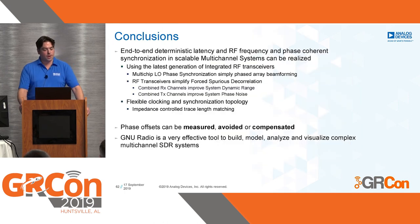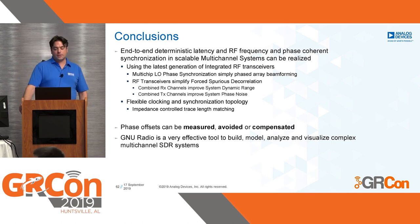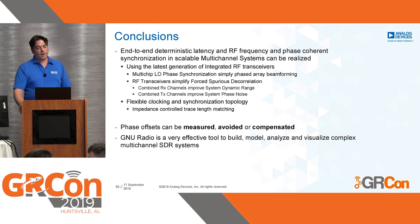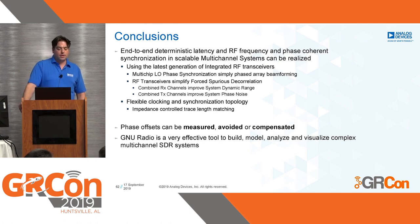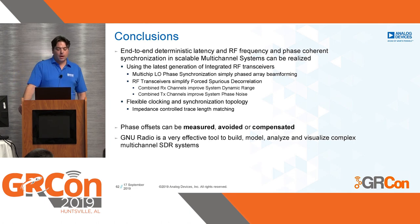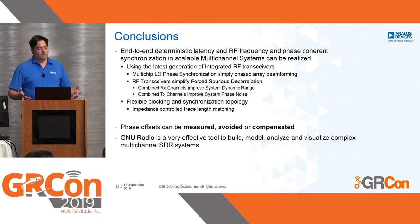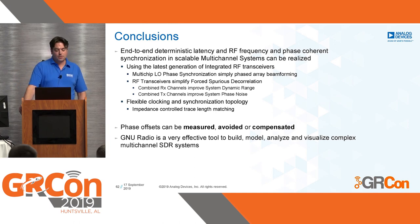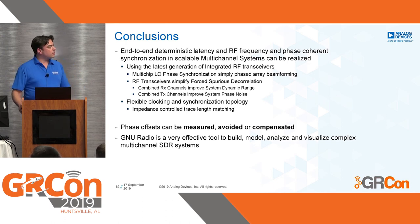In conclusion: end-to-end deterministic latency and RF phase and frequency synchronization can be realized in a multi-channel system using the latest generation of integrated transceivers. Multi-chip LO phase synchronization simplifies phased array beamforming. Spurious decorrelation can improve system dynamic range and transmit phase noise. A flexible clocking and synchronization topology is always required, and all traces need to be impedance and length matched. Phase offsets can be measured, avoided, or most often compensated. GNU Radio is a very effective tool to build, model, analyze, and visualize multi-channel software-defined radio systems.